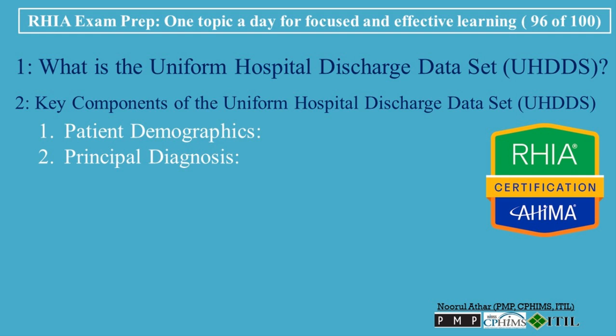The second component is the Principal Diagnosis, which is the condition chiefly responsible for the patient's hospital admission. This diagnosis plays a key role in determining reimbursement under the IPPS, as it is used to assign the appropriate diagnosis-related group, DRG. Additionally, UHDDS captures up to 24 secondary diagnoses, including complications and comorbidities.